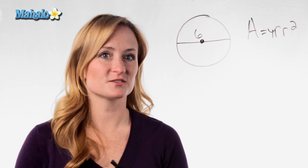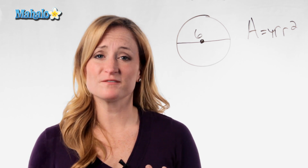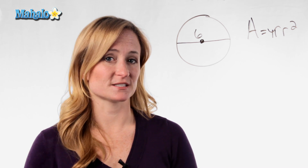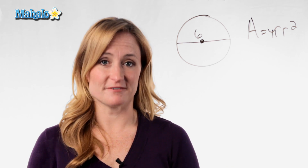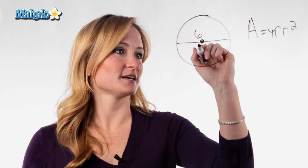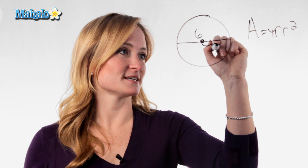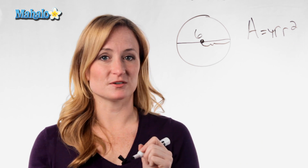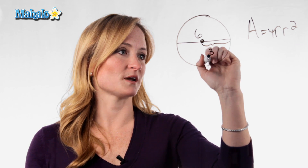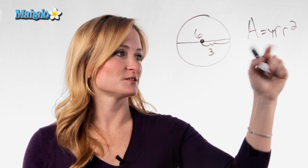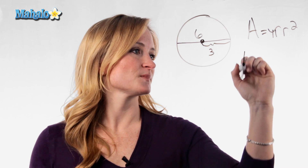So if this were our circle, the only information we have is a diameter of 6. So that means you need to find your radius. We know that the radius is half of the diameter, so in this case our radius would be 3. So we need to plug that into our formula.